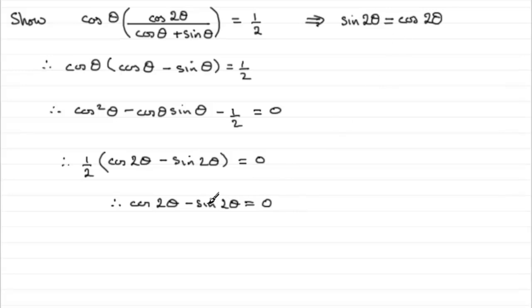All I've got to do is add sin 2θ to both sides, which gives me cos 2θ equals sin 2θ. You might not want to write that line in, but just go straight to sin 2θ equals cos 2θ. So that would show us that result.